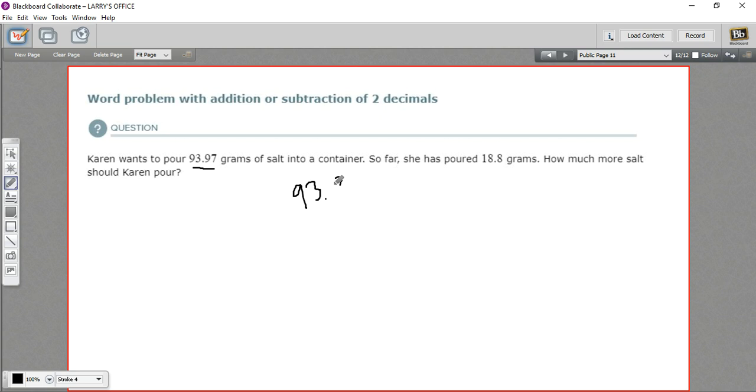93.97 minus, and we've got to make sure to line up the decimal points. So 18.8, and then we can fill in with a trailing zero. 18.80 is the same as 18.8. And then we can just do our subtraction.